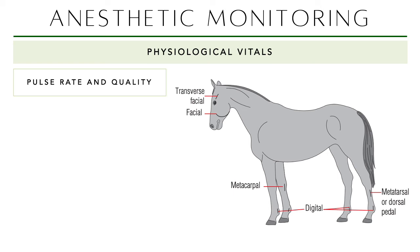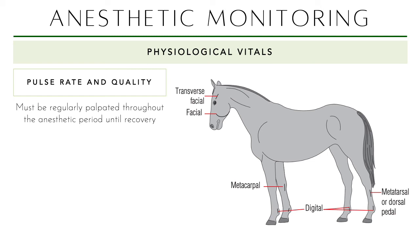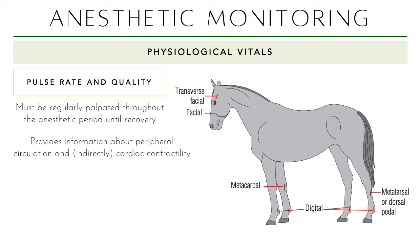For pulse rate and quality, palpate every five minutes — this provides information about peripheral circulation and cardiac contractility. In horses you have many sites: transverse facial artery, facial artery, metacarpal, digital (four of those), and metatarsal or dorsal pedal artery. The facial, transverse facial, and dorsal pedal are also sites for catheter placement. In equine surgical centers, monitoring is similar to humans: ECG and an arterial catheter inside the artery for direct arterial pressure measurement — more precise than the indirect oscillometric cuff method, but quite invasive and must only be done by experienced personnel.